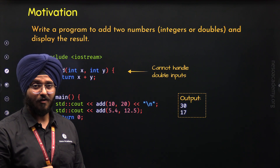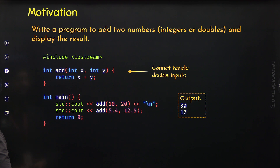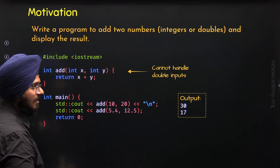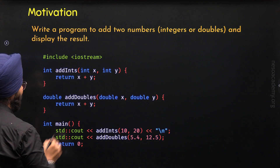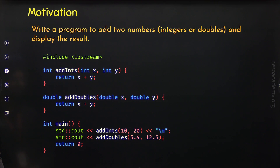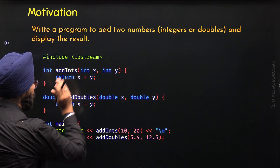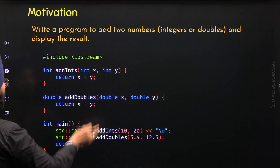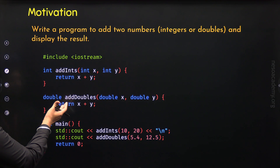Now we need to find a solution to this problem. The solution is pretty simple — we can define one more function that has the capability to accept double inputs, operate on them, and return a double output. So let's define two functions: the first is addInts and the second is addDoubles. addInts can add two integers, and addDoubles can add two double values and return a double result. Now we know we will get the desired output.